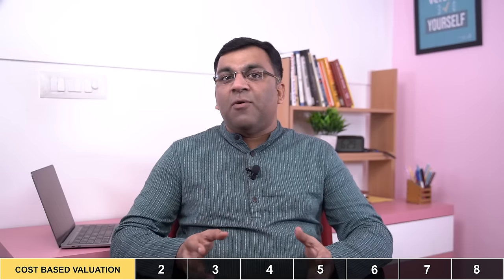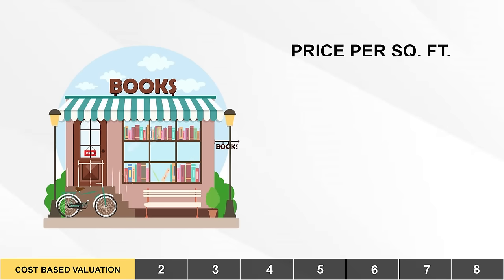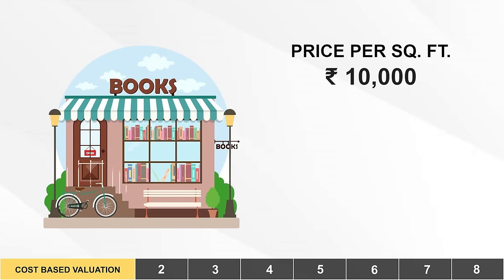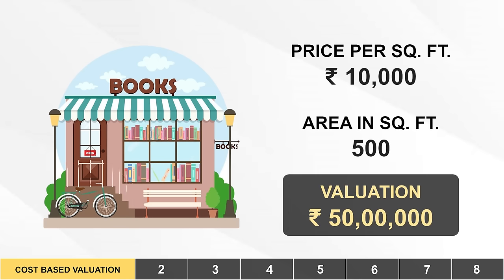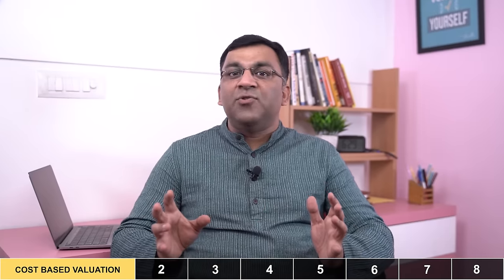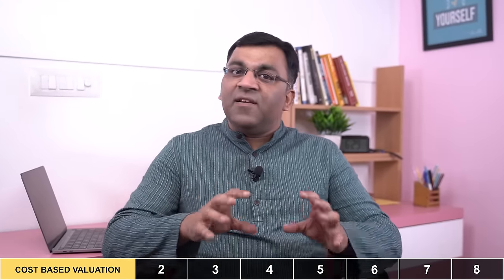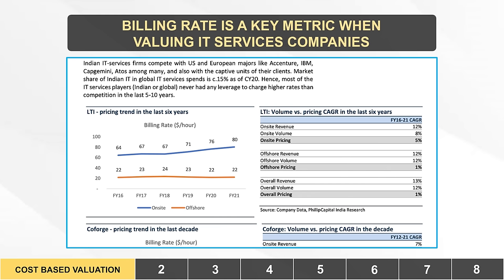The first way of valuing the bookshop is on a price per square feet basis. Assuming the going rate is 10,000 rupees per square foot, and since this is a 500 square feet shop, the price of this property comes to 50 lakh rupees. It's a methodology used in valuing buildings, warehouses, land banks, etc., where the circle rate is multiplied by the area to arrive at the property's price. By extension, this approach can also be used when valuing service-oriented setups like a consulting firm or an IT services company like Infosys, TCS, etc.